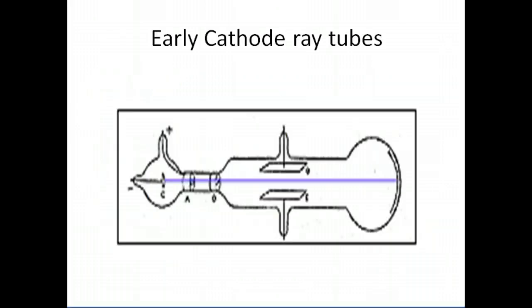This is a picture of a cathode ray tube, a piece of equipment that was experimented with during the latter part of the 1800s. Crooks was one of the scientists who did a lot of experimentation with it. He raised the question of whether the beam projected by the cathode tube was a beam of light or particles. He placed magnetic plates on either side and noticed the beam was deflected, concluding it was a beam of particles.